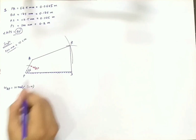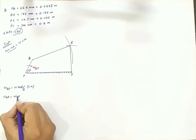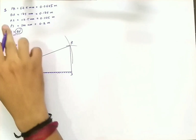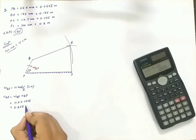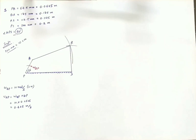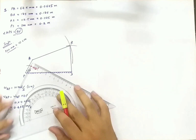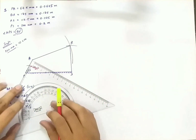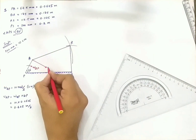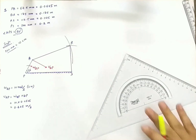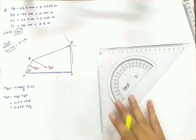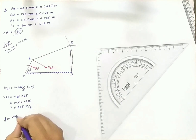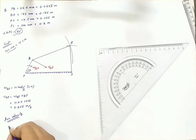The angular velocity is given as 10 radians per second in the clockwise direction, so we can easily find out the velocity of link QP, which is equal to 0.625 meter per second. The direction of the input velocity is clockwise and perpendicular to the PQ link — this is VQP. We now have both the direction and magnitude of the input link, so we proceed to the velocity diagram.